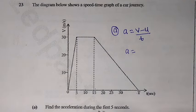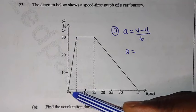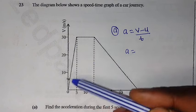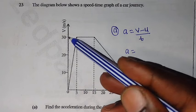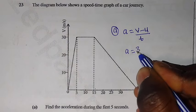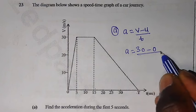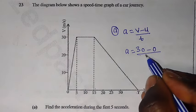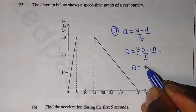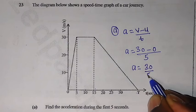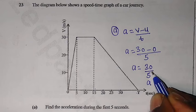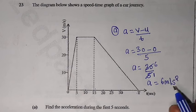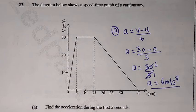The particle started moving from zero meters per second, reaching 30 meters per second. So zero is the initial velocity and the final velocity is 30. We write: acceleration equals 30 minus 0, over 5. So acceleration equals 30 over 5, which gives us 6 meters per second squared. That is our answer to question A.